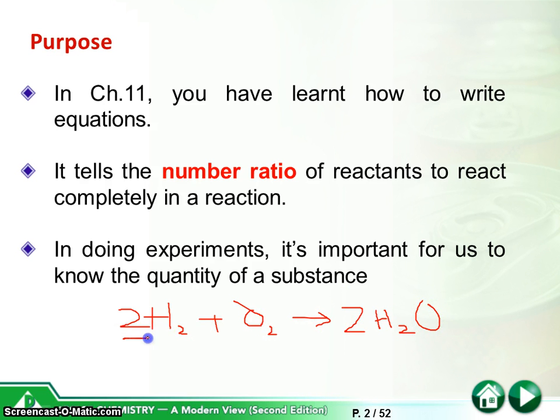So the number here, 2, and here missing the 1, tells you when we need to have the H2 react completely with the oxygen, then we need to have 2H2 to 1O2 to give the 2H2O. So actually this tells you the number ratio of the reactants.